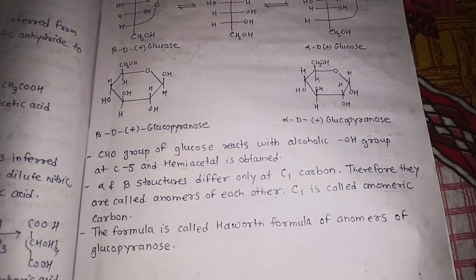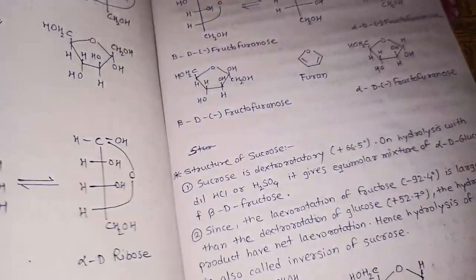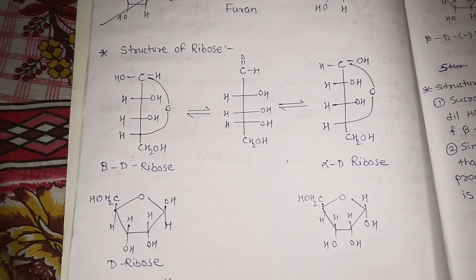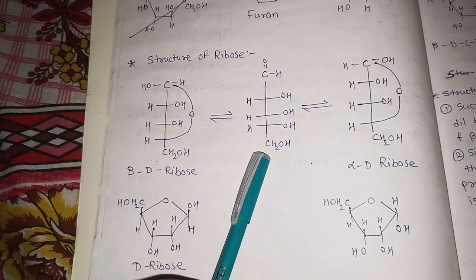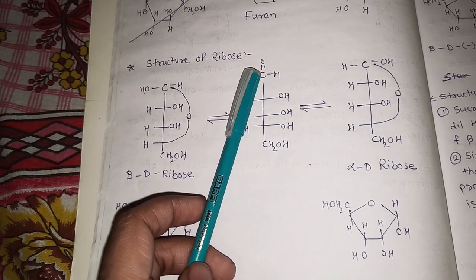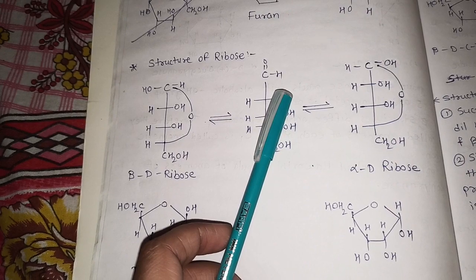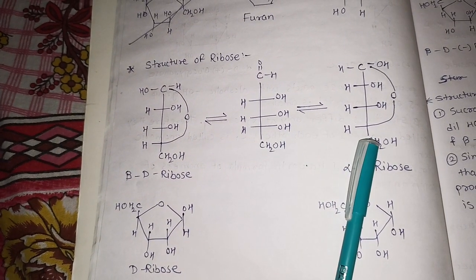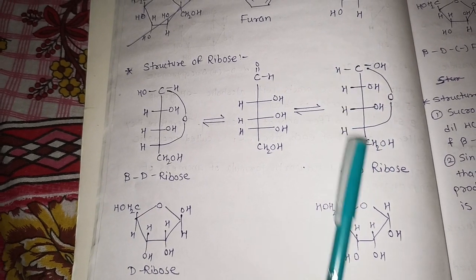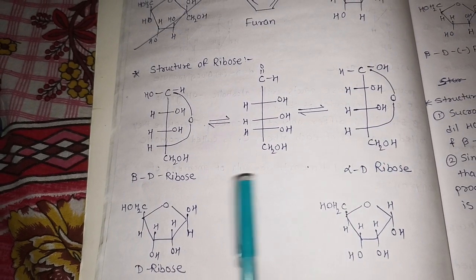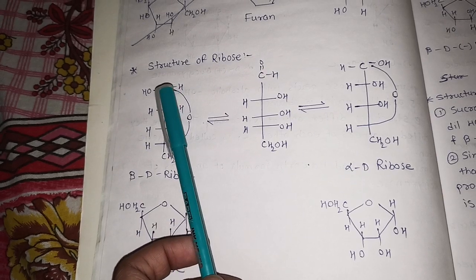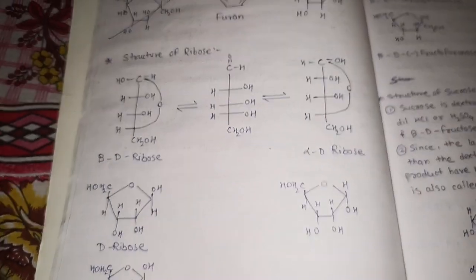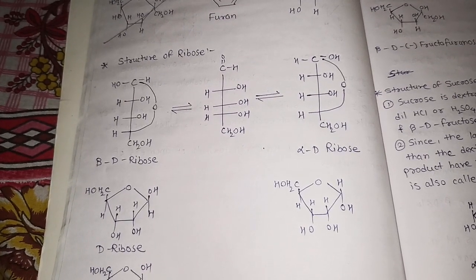Similar to glucose, we will draw the structures of ribose and fructose. Ribose has 5 carbons — the first is CHO, the last is primary alcohol CH2OH, and the other three have OH on the right side with complementary H on the left. The aldehyde and secondary alcohol give a hemiacetal. In alpha-D-ribose, OH is on the right at C1; in beta-D-ribose, OH is on the left.